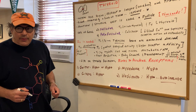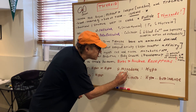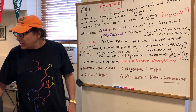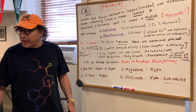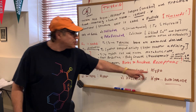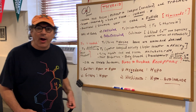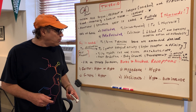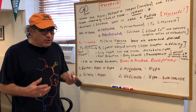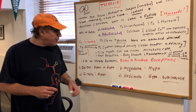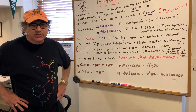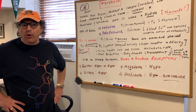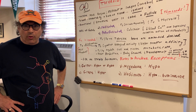Myxedema — focus on the X, which is at the bottom, meaning last. If you're last in a race, think slow, so think hypo — hypothyroidism. Finally, Hashimoto's disease is an autoimmune disease involving hypothyroidism, where there is an underactive thyroid.